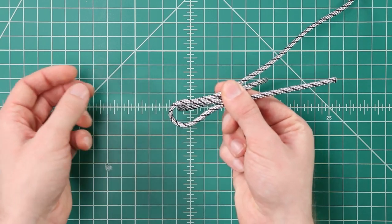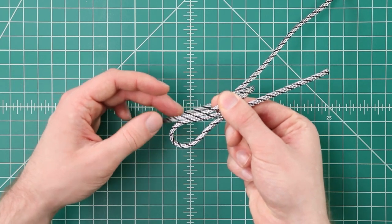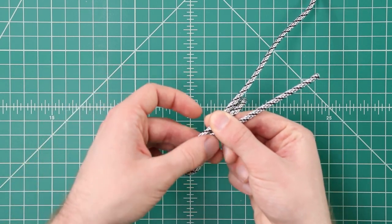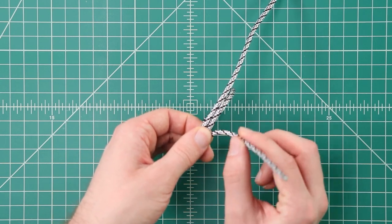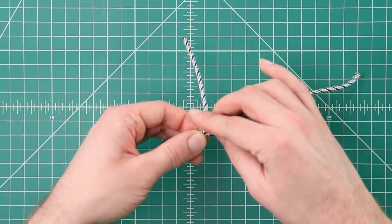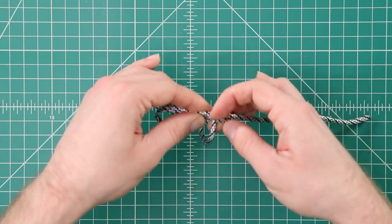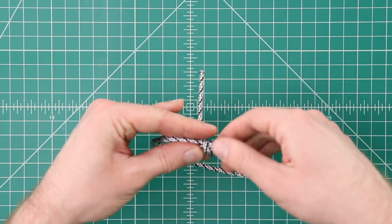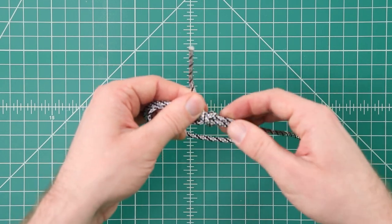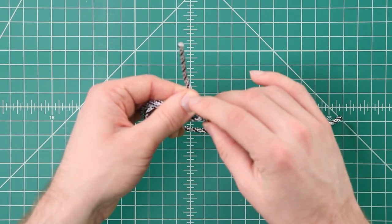Just like that. So the second loop is going to be parallel with the first loop you made. And this working end here you're going to put over the two cords there. It's going to wrap under and then go back over everything one more time. So it forms a little X.